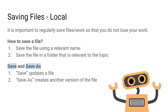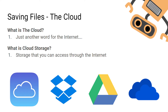For example, for a science topic, name the file relevant to the topic and save it in a folder called 'Science'. Some keywords to remember: 'Save' means updating a file, and 'Save As' means creating another version of a file. These are common in Microsoft Office products.